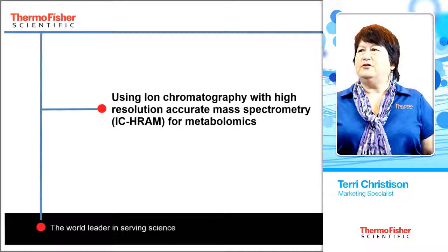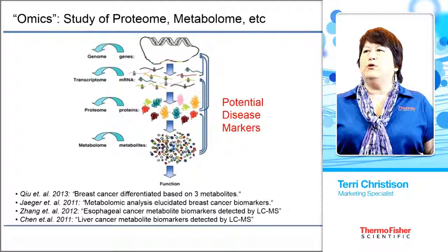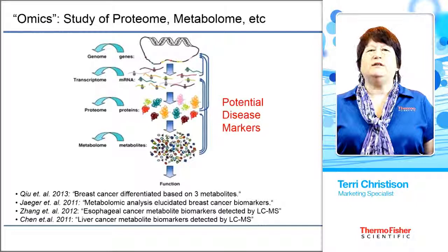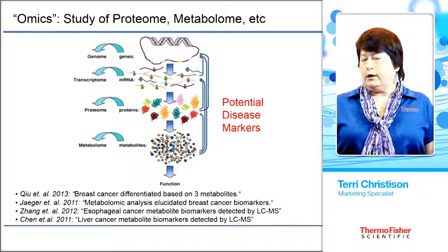Omics is the study of the proteome and the metabolome, from the genome to transcription, then to proteome, and then metabolomics. It's used to study potential disease markers, but much like the genome studies, they've had much promise and much excitement but have not really played through completely. However, metabolomics studies all the effects of all of these, and in that case, we have already shown some very amazing disease discovery and biomarkers.